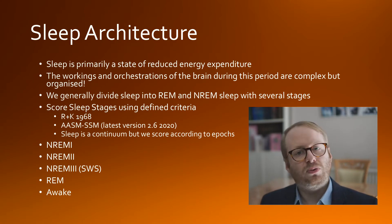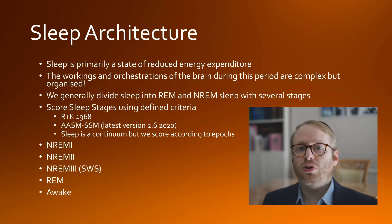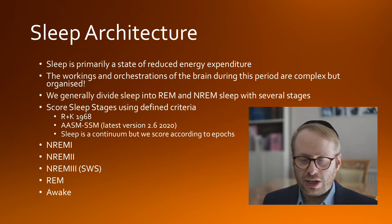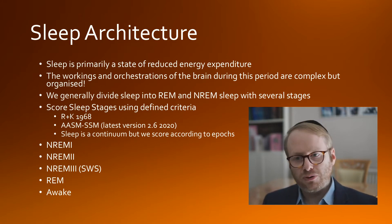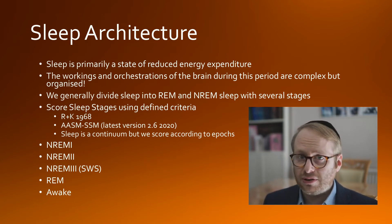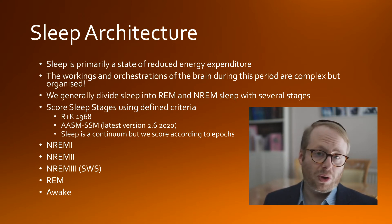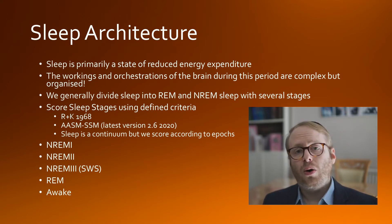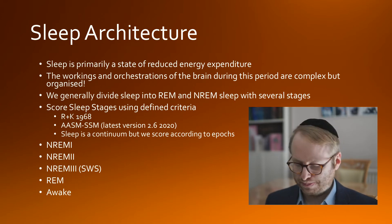Within the non-REM sleep criteria we have non-REM sleep stages 1, 2, and 3. There used to be stage 4 as well, but from 2007 stages 3 and 4 were combined, so it's really 1, 2, and 3. We also have REM and the state of being awake.